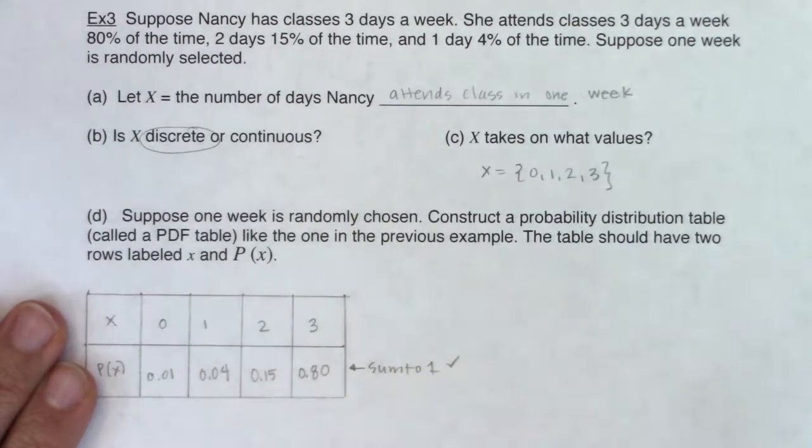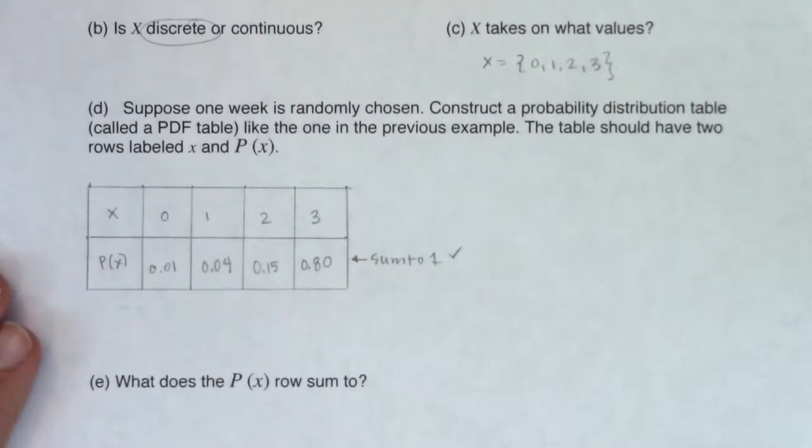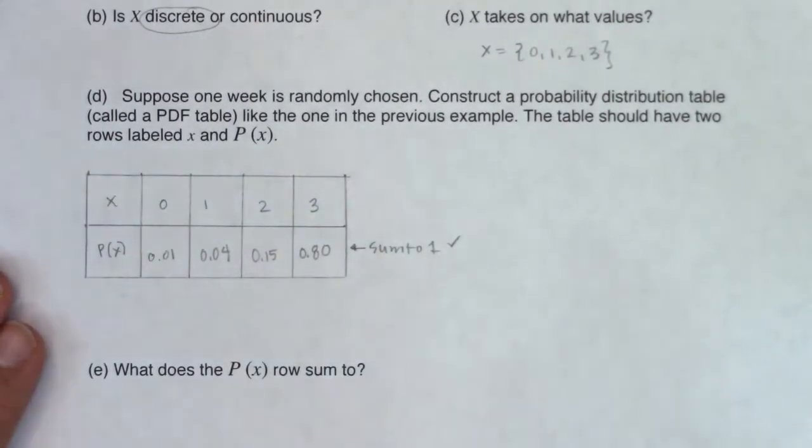So let's just take a note right here, these sum to one. And that's what part E is asking us also. It's just straight up asking, what did these values sum to? They should sum to one.